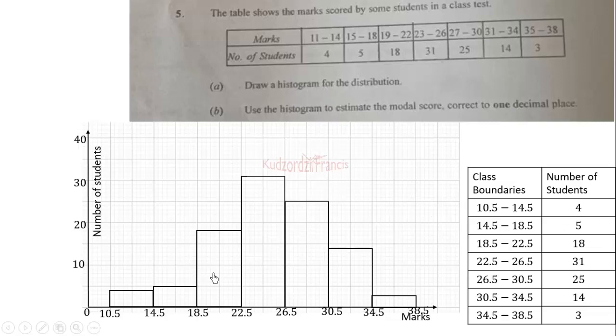Now we are done with part A of the question. We are now in part B. Part B is: use the histogram to estimate the modal score to one decimal place.